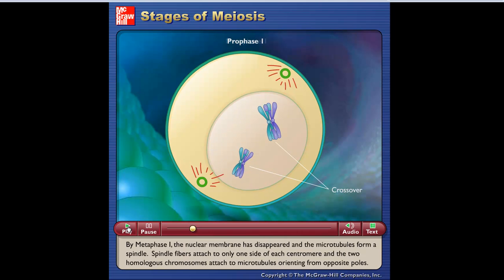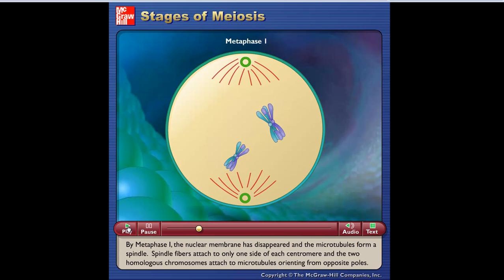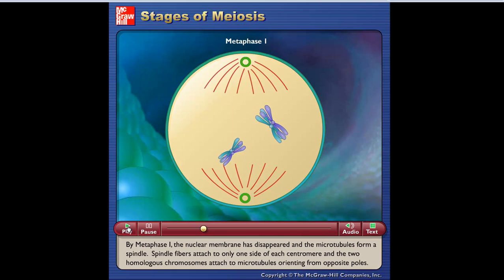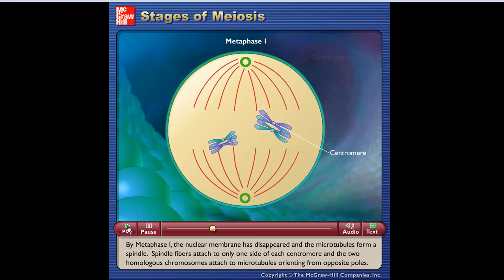By metaphase I, the nuclear membrane has disappeared and the microtubules form a spindle. Spindle fibers attach to only one side of each centromere, and the two homologous chromosomes attach to microtubules orienting from opposite poles.